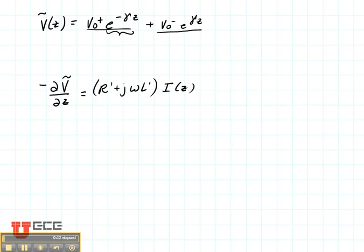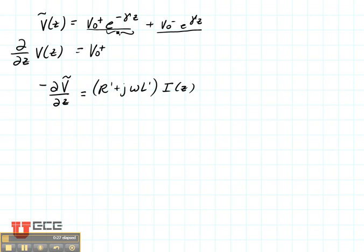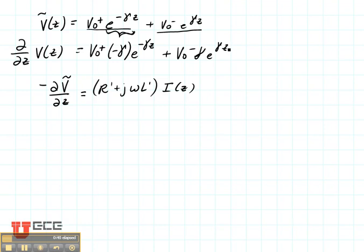Let's start with this equation for voltage, which represents the positive and the negative traveling waves. Then let's take its derivative with respect to Z. So dV by dz is equal to V0 plus, and when I take the derivative of this term I'm going to get a minus gamma times e to the minus gamma z, plus V0 minus times gamma e to the gamma z. We can compare this to the telegrapher's equation, and you can see that this term and this term without the minus sign are equal.